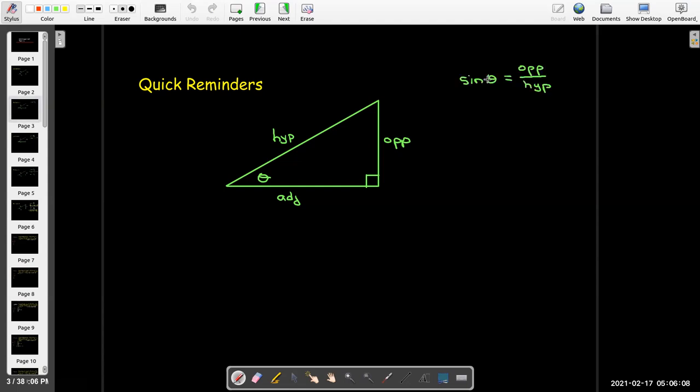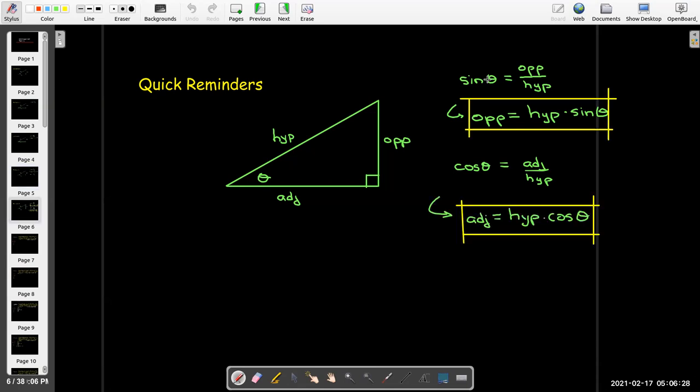We remember that sine of theta is the opposite over hypotenuse, but the way we're going to think about this is that the opposite is going to be the hypotenuse times sine of theta. Same idea with cosine. Cosine is adjacent over hypotenuse, but we're just going to think of that the adjacent is the hypotenuse times cosine of theta.